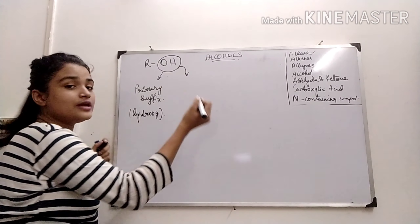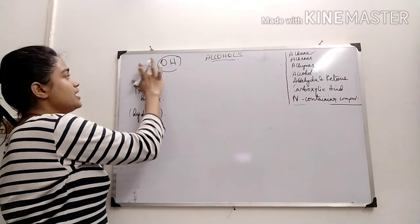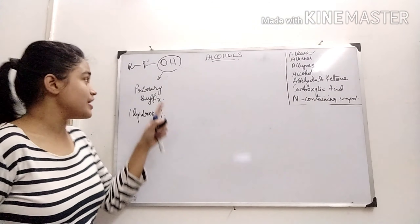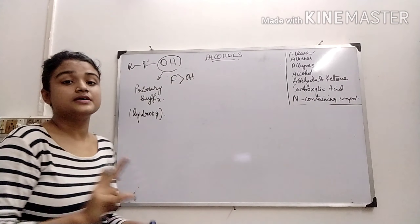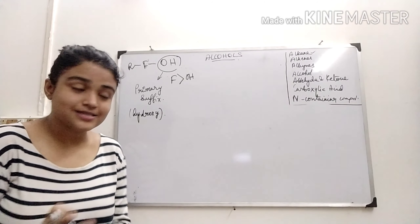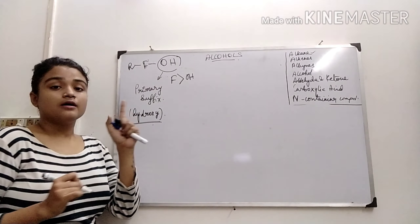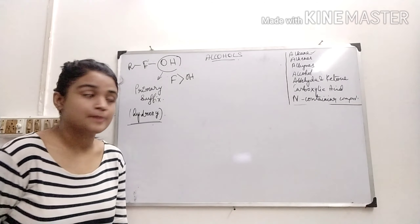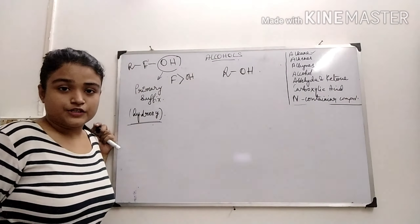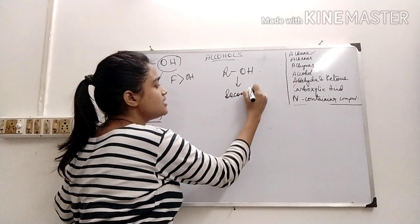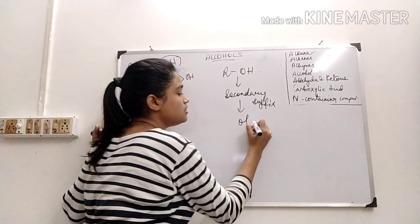This is applicable when alcohol is present with some other functional group. This F represents a functional group where the priority order of this functional group is higher than that of alcohol. So in that case, we write the name of this alcohol as the prefix, and it comes first in the IUPAC naming system. Now, if it is present alone — only as OH in the compound — then it is acting as the secondary suffix, where the suffix name is 'ol'. We write 'ol'.